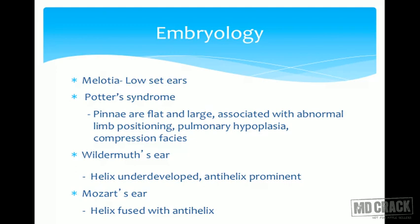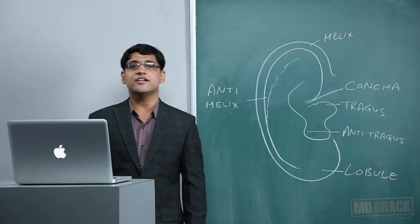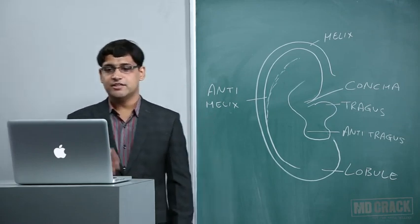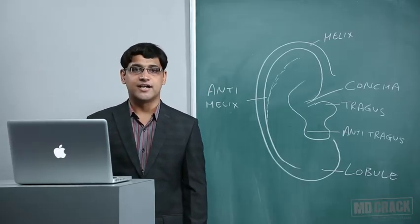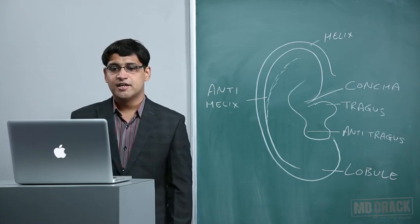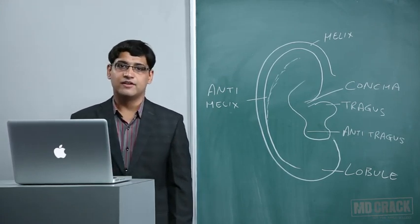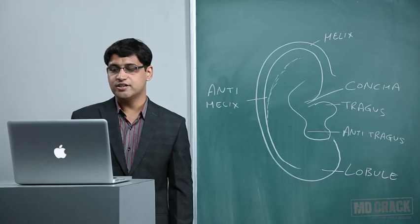Mozart's ear is an anomaly where the helix and anti-helix are fused together. Otoplasty is the reconstruction of the pinna, done for anotia (complete absence of pinna) and microtia (only rudimentary parts present). It should be done at six years of age using rib cartilage, because at that time the ribs are fully developed. Preformed ears are available but have a greater rejection rate, so rib cartilage is the better technique.